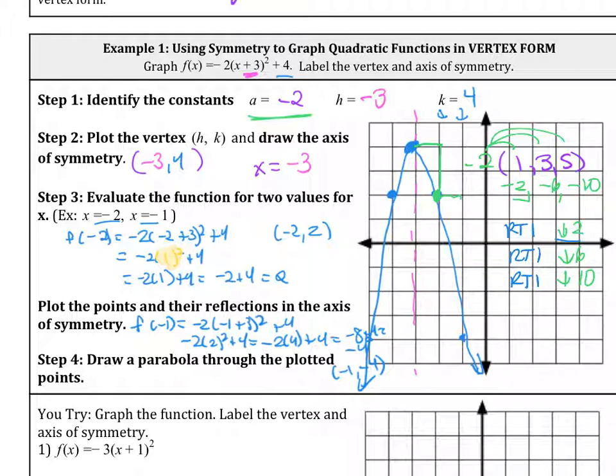Then you go right 1, down 6, and notice that it is right here. So instead of having to plug in these numbers, which you still could do, you could apply the pattern of 1, 3, 5, and then multiplying whatever a value is to it. It's just a shortcut. It's also a way to verify that you plugged in the numbers correctly, but it's just one way to do it.